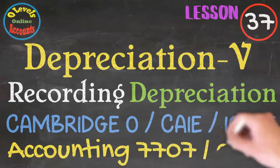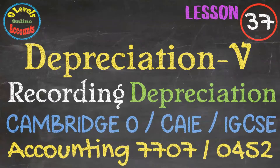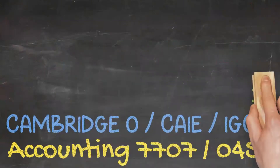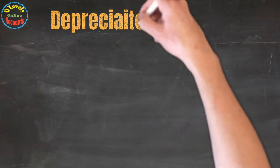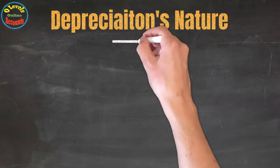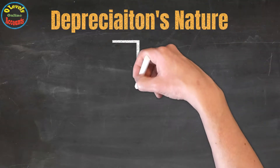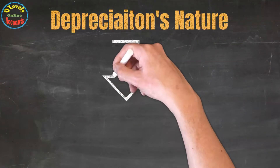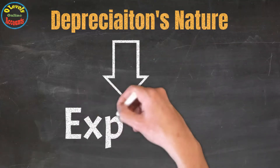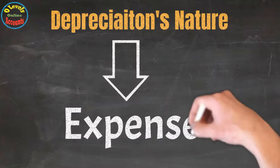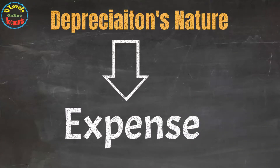Let's begin the lesson material. As far as depreciation nature is concerned, it is an expense because the company is facing a reduction in its fixed assets value, and losses are expenses in nature. So depreciation would fall in this category.